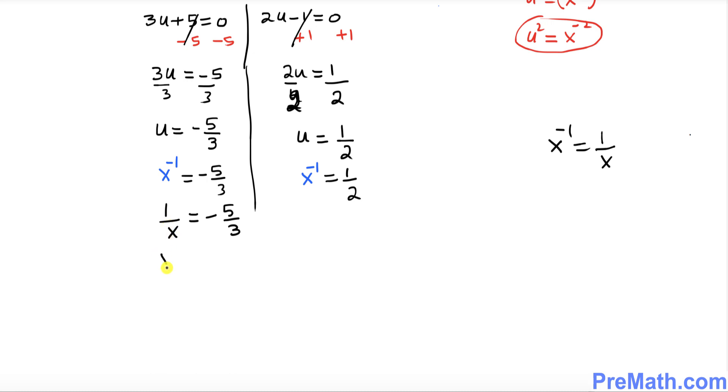So once you flip it over this becomes x over 1. And you must flip it over on this side as well, so this becomes negative 3 over 5. x over 1 is same as x equal to negative 3 fifths. That is one of our solutions.